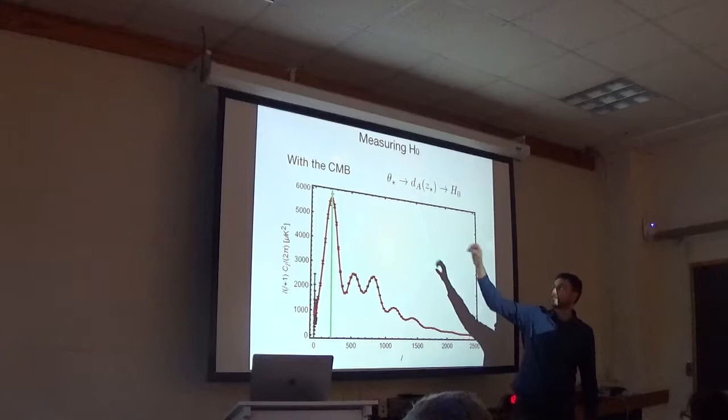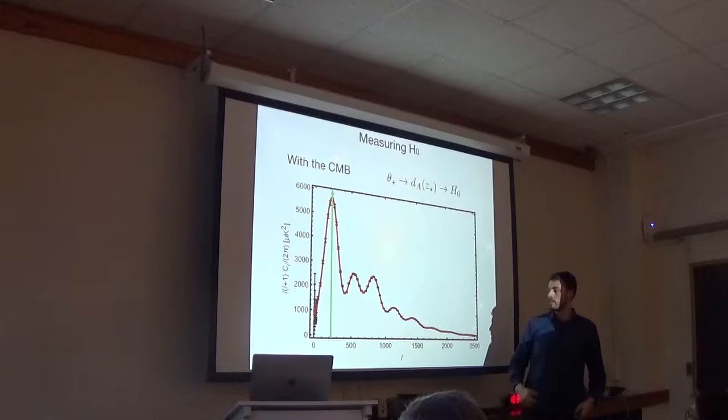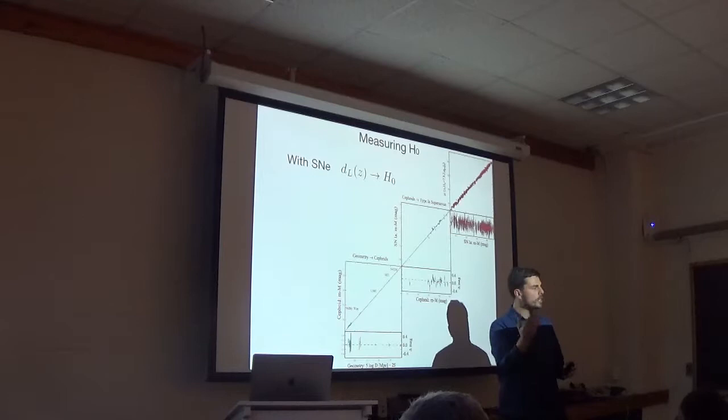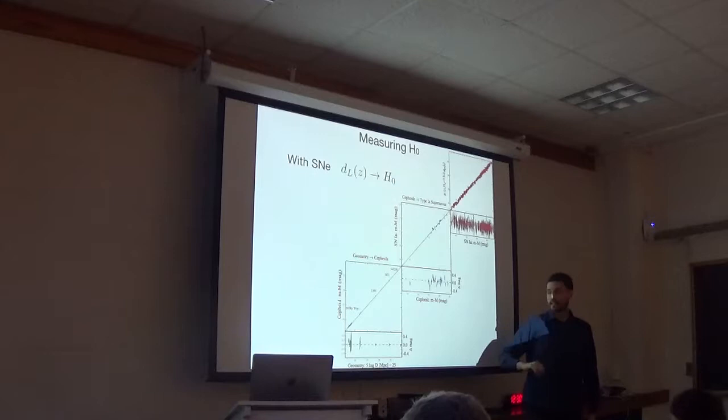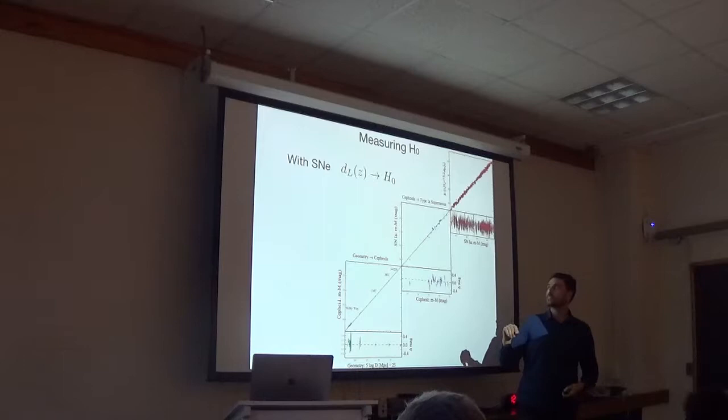So let me begin to tell you how we usually measure H-naught. One of my favorite ways is using the CMB, where the angular structure of the CMB tells us some angle of the last pattern's surface, in which we can measure the angular diameter distance, and thus H-naught. A different way is to look at the local universe, look at standard candles such as supernovae Type 1A. You measure flux, get luminosity distance, and then H-naught.